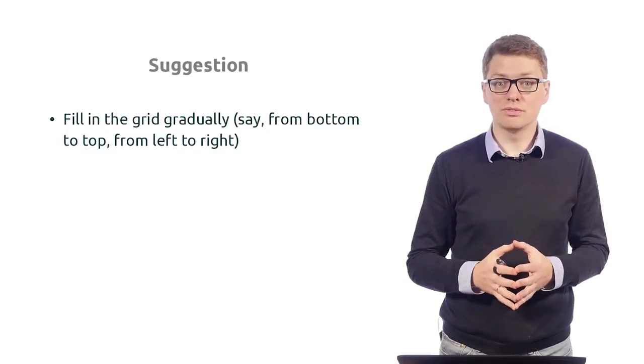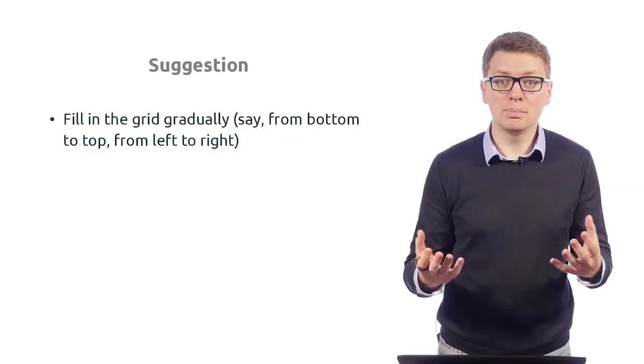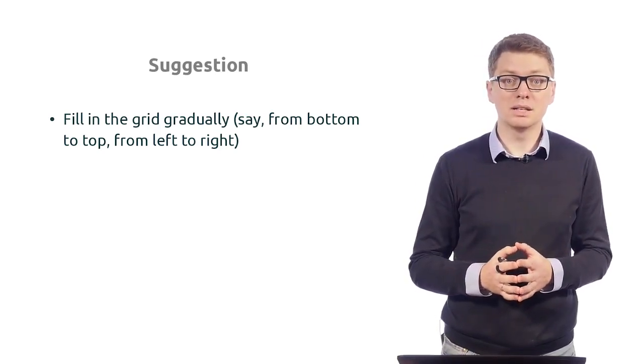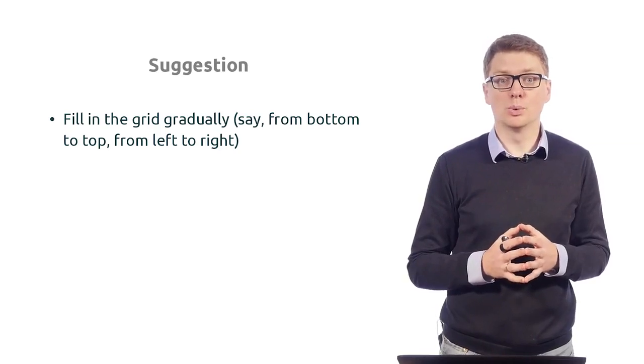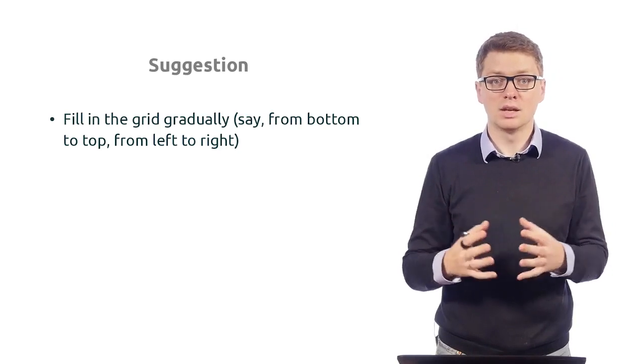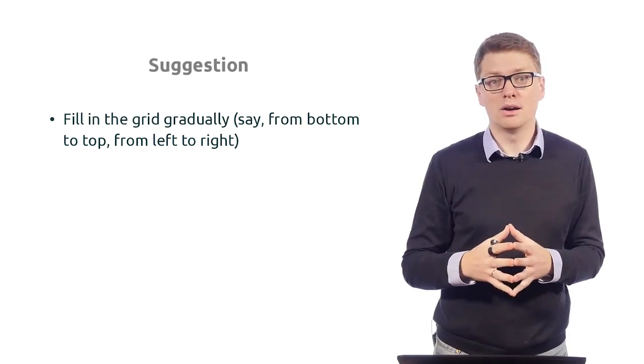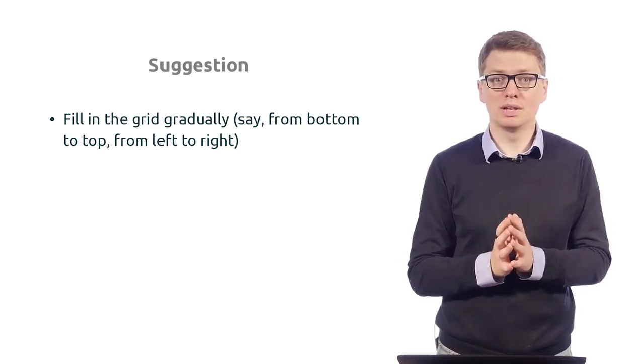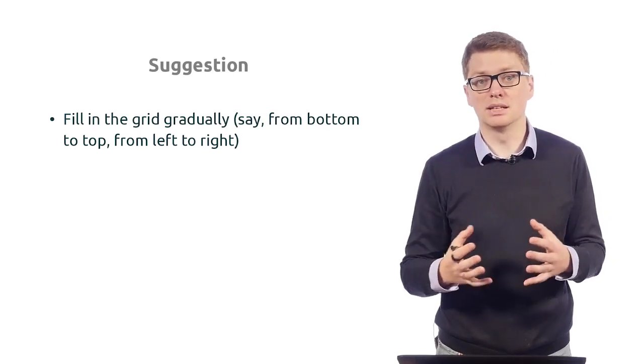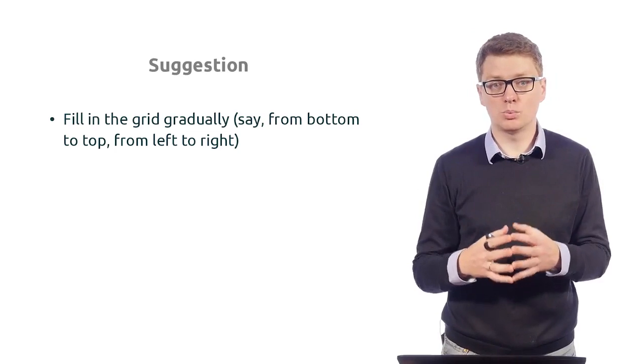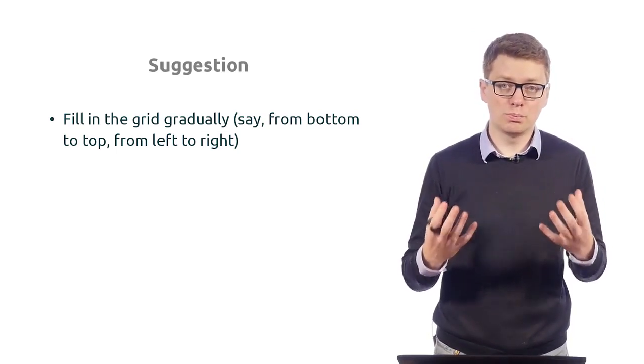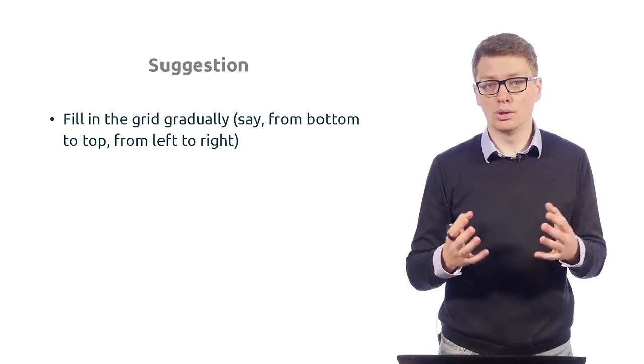And this is a suggestion for you. So to implement the backtracking program for solving this puzzle, you may want to do the following. Consider your five by five grid. This is 25 cells which are initially empty. Or to be more formal, let's assume that initially we have minus one in all these cells. Minus one indicates that we haven't yet decided what to put into all these cells.